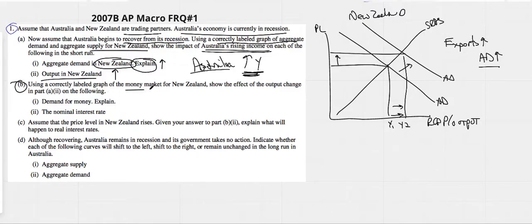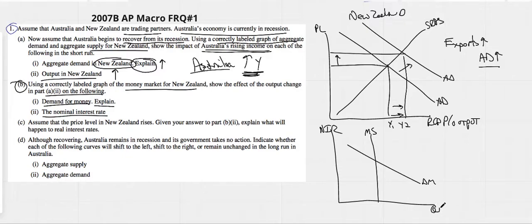Therefore price level and output also have to go up. Using a correctly labeled graph of the money market for New Zealand, show each of the output changes. So money supply, demand for money - downward sloping, it can be a straight line. Some people draw it curved, I like it straight. Obviously it's nominal interest rates on the vertical.